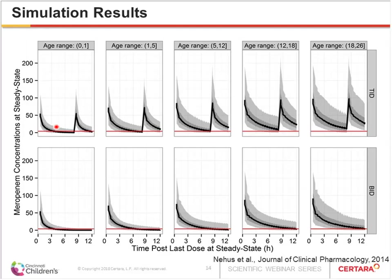The simulation results showed that in older children — particularly those older than 12 — a dosing regimen of 20 mg per kg every 12 hours achieved fairly good target attainment, with the median above the MIC for most of the dosing interval and almost all patients exceeding 40% of the dosing interval. However, for younger children, the Q12 dosing interval resulted in a significant portion of simulations achieving suboptimal target attainment, and increasing the frequency to Q8 improved this.